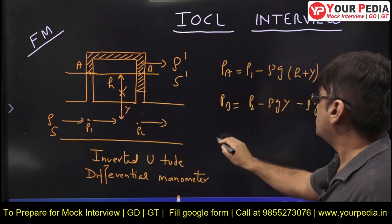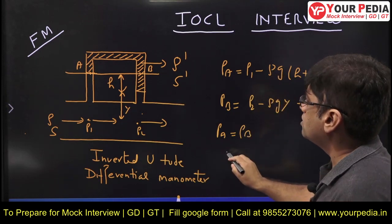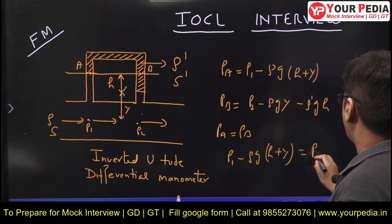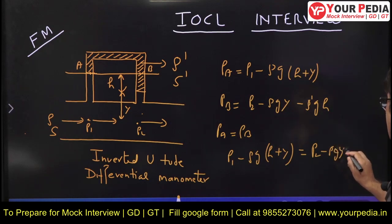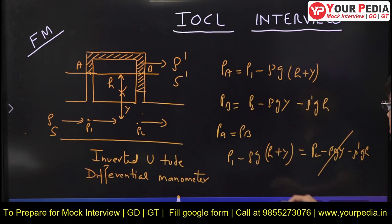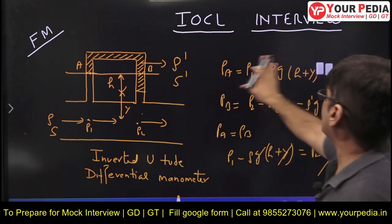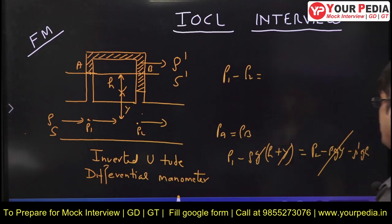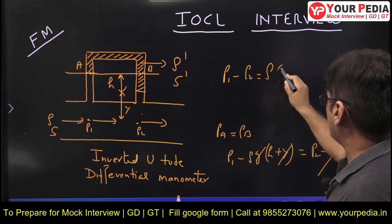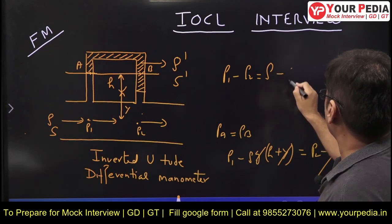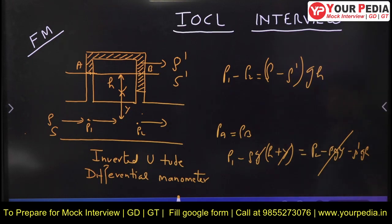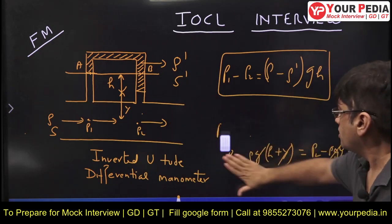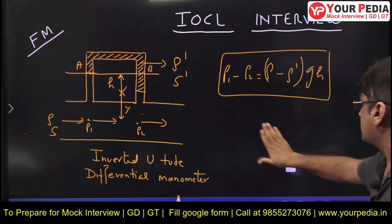By Pascal's law, pressure at A equals pressure at B. Equating the two expressions and cancelling common terms (rho*g*y terms cancel out), we get the final result: P1 minus P2 equals (rho minus rho_dash) times g times h. This is the pressure difference formula for an inverted U-tube manometer.